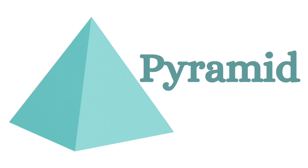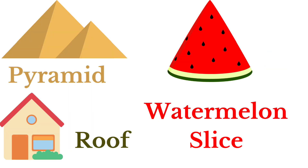This is the shape of a pyramid. Pyramid looks like this. Let us see some few examples for the shape of pyramid: Egyptian pyramids, watermelon slice, roof of the house. These shapes look like a pyramid.